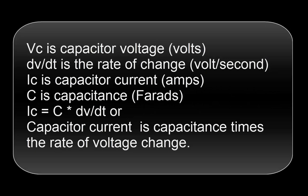VC is capacitor voltage. DVDT is rate of change, volts per second. IC is capacitor current in amps. C is capacitance in farads. IC is C multiplied by DVDT, or capacitor current is capacitance times the rate of voltage change.